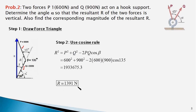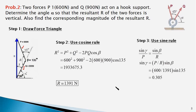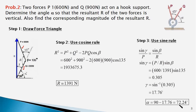Now we use the sine rule to determine angle gamma, which gives us alpha equal to 90 degrees minus gamma. Sine of gamma upon the opposite side P equals sine of beta upon the opposite side R. Using this equation, sine gamma equals 0.305, so angle gamma equals sine inverse of this value, which is 17.76 degrees. Therefore alpha equals 90 minus 17.76, which is 72.24 degrees. The force Q should make an angle of 72.24 degrees with the horizontal so that the resultant is vertical, with a magnitude of 1391 Newtons.